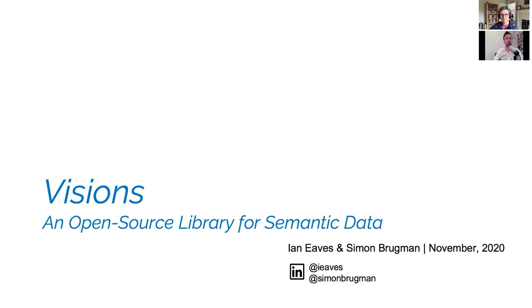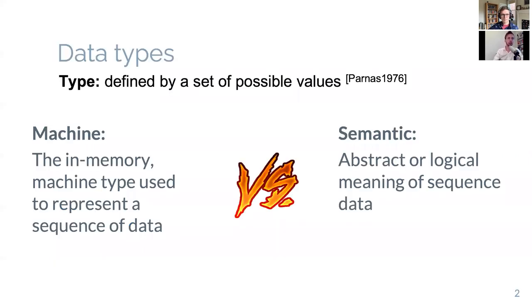So let's start off with defining some terms. We're talking about data types and one way to view data types is as being defined by a set of possible values. And intuitively, we can understand semantic types as something we're working with every day. If you think about names or countries, they are all abstract meanings of sequences of data, probability as well.